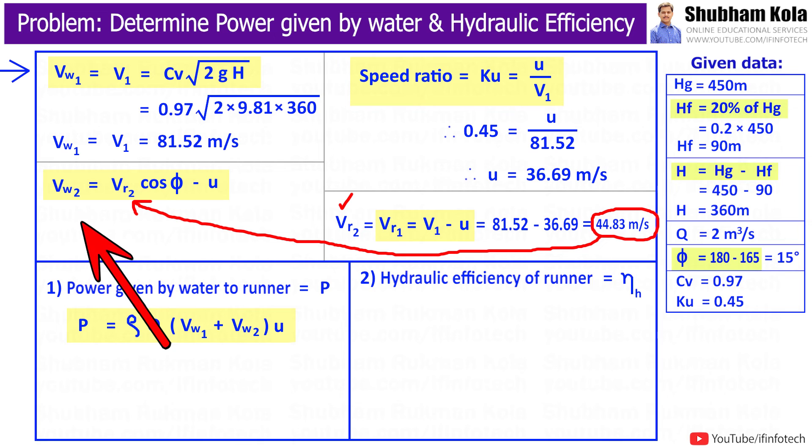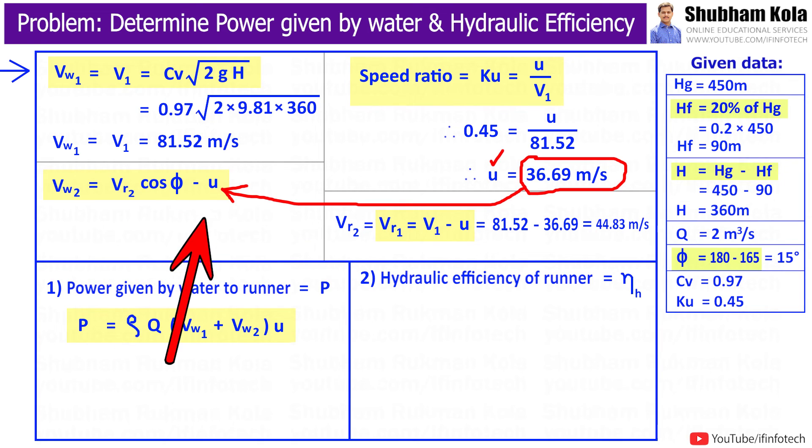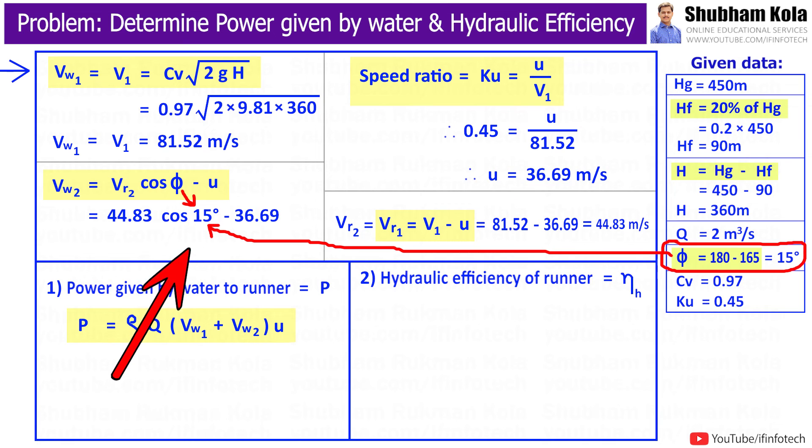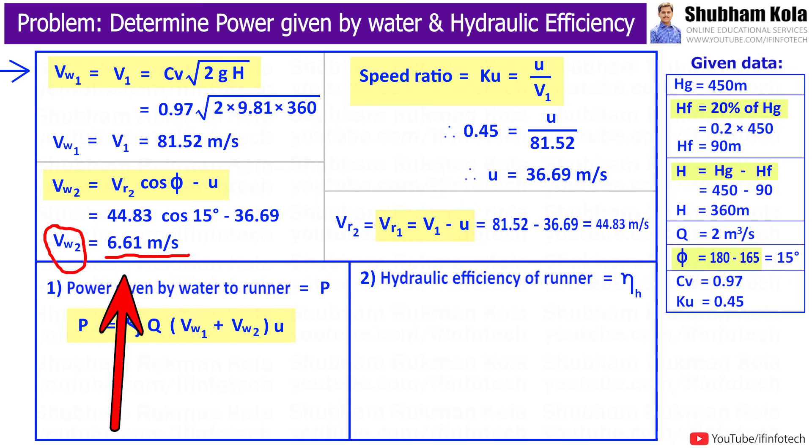Therefore, to calculate Vw2, I will substitute values of Vr2 as u, and value of blade angle φ, we have 15 degrees. So this will give me the value of Vw2 as 6.61 meters per second.